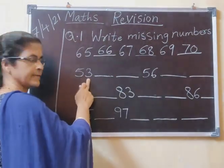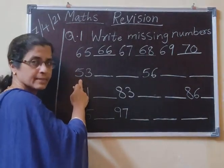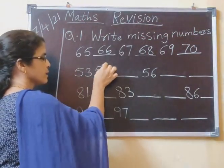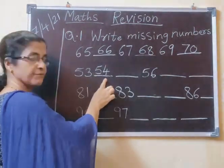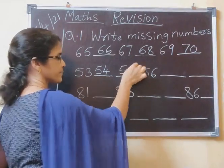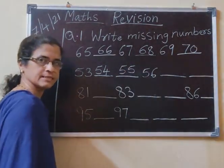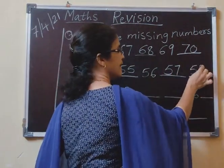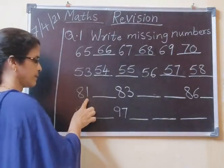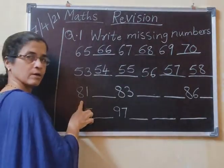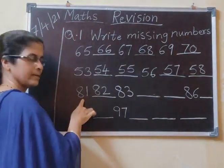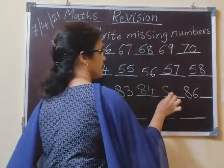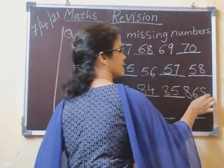Now 53. You have to see the number. Note that you have to see the number 53. After 53, what comes? 54. 53, 54, and then 55. After 55, 56. After 56, 57. After 57, 58. Next one: 81. After 81, what comes? 82. 81, 82, 83, 84, 85, 86, 87.